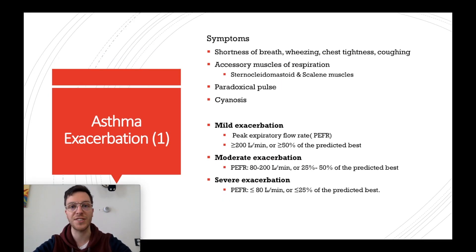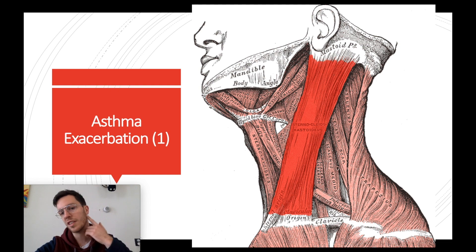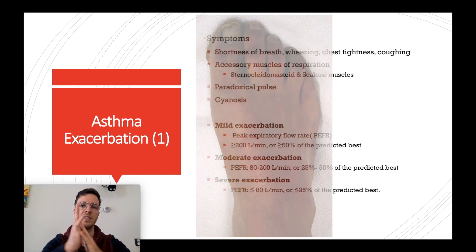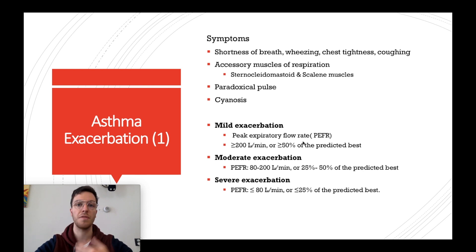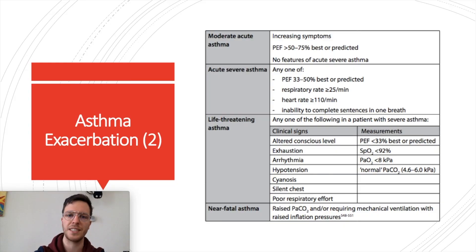An asthma exacerbation presents with similar symptoms — shortness of breath, wheezing, chest tightness, and coughing — but worse. Patients use accessory muscles of respiration like the sternocleidomastoid and scalene muscles, may have a paradoxical pulse, and cyanosis from low oxygen saturation. There are degrees: in mild exacerbation, peak expiratory flow rate (PEFR) is over 200 L/min or 50%+ of predicted best. Moderate exacerbation: 80–200 L/min, 25–50% of predicted. Severe exacerbation: less than 20% of predicted values.